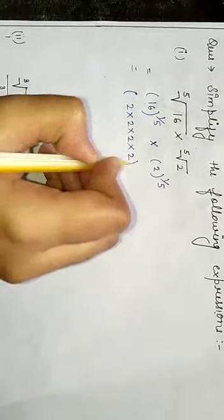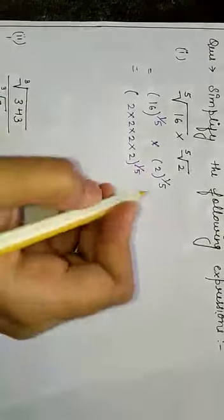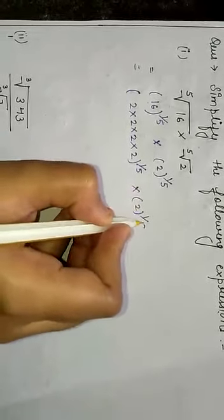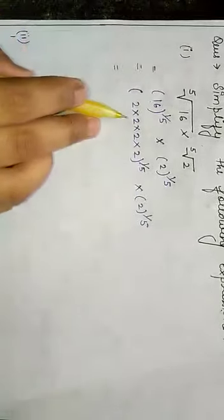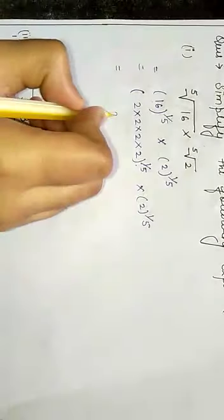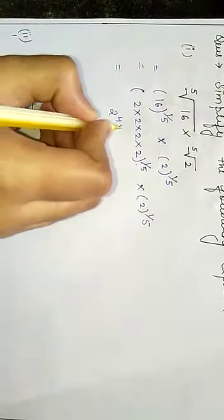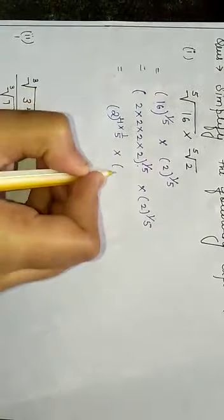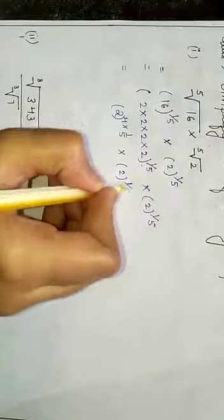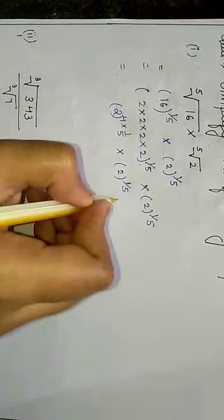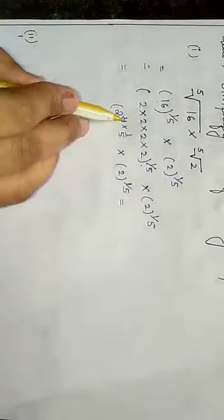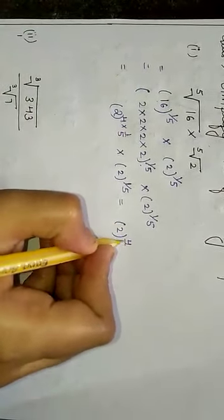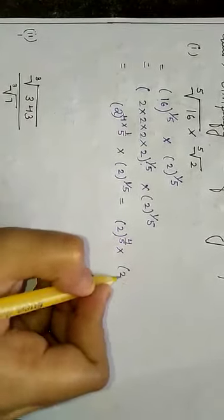Then whole power of 1/5 times 2 to the power 1/5. Then I can write this as 2 to the power (4 × 1/5) times 2 to the power 1/5. So 4 times 1 is 2 to the power 4/5 and 2 to the power 1/5.